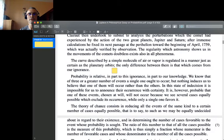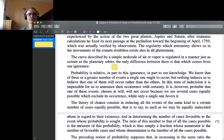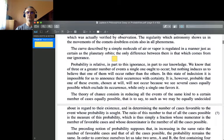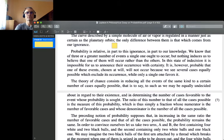I go to a specific passage: The curve described by a simple molecule of air or vapor is regulated in a manner just as certain as the planetary orbits. The only difference between them is that which comes from our ignorance. Probability is relative in part to this ignorance, in part to our knowledge. We know that of three or a greater number of events a single one ought to occur, but nothing induces us to believe that one of them will occur rather than the others. It is however probable that one of these events, chosen at will, will not occur because we see several cases equally possible which exclude its occurrence while only a single one favors it.